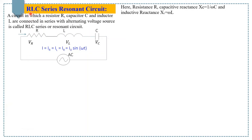In this lecture we will discuss the RLC series circuit. In an RLC series circuit, the fundamental elements are resistor R, inductor L, and capacitor C connected in series across an AC voltage supply.